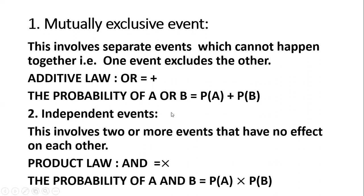The second type is independent events. This involves two or more events that have no effect on each other, so we normally use the multiplicative law. We use the word 'and'. When you do that, you multiply their probabilities. Probability of A and B happening equals probability of A times probability of B.